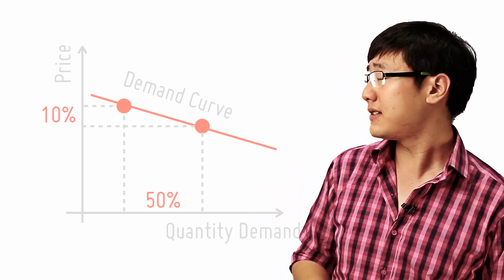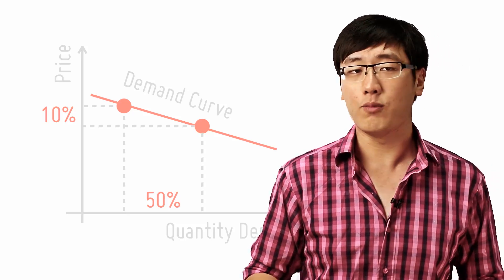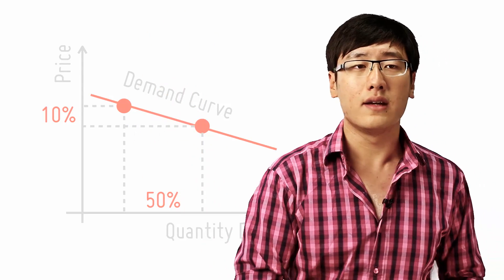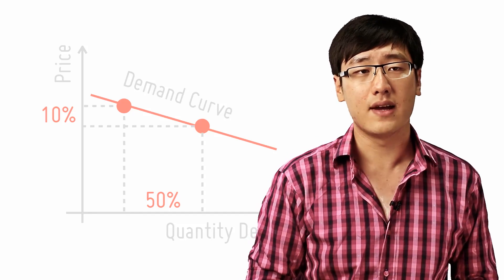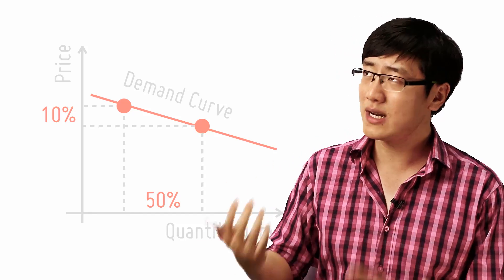So if the elasticity of the curve is 5, then when the price increases by 10%, the quantity will change by 5 times as much, which is 50%. Similarly, if the price changes by 20%, then the quantity demanded will change by 100%.